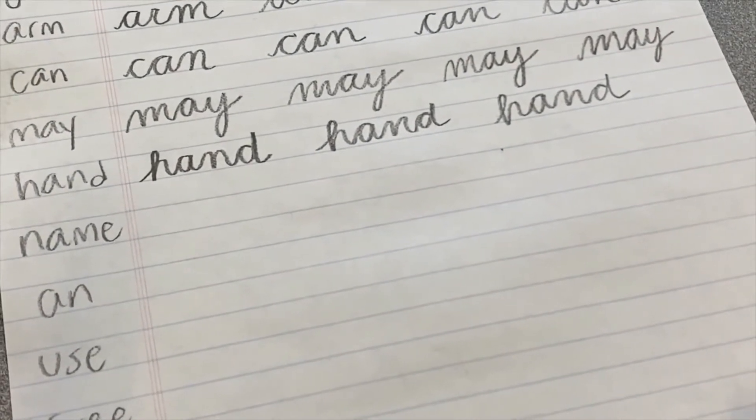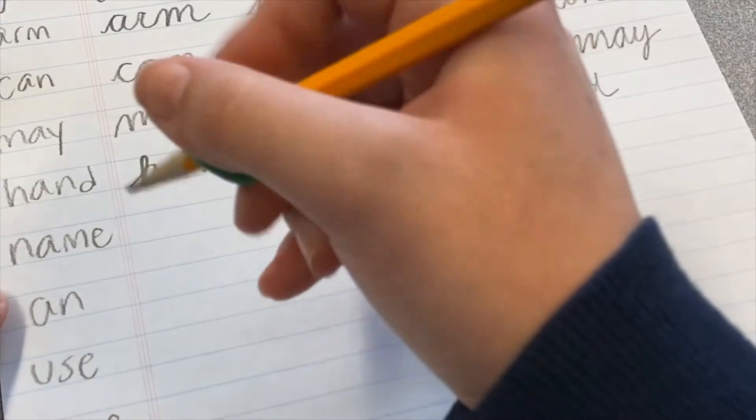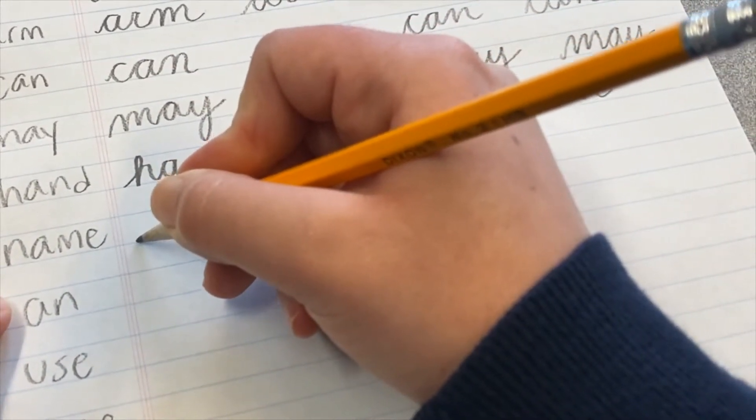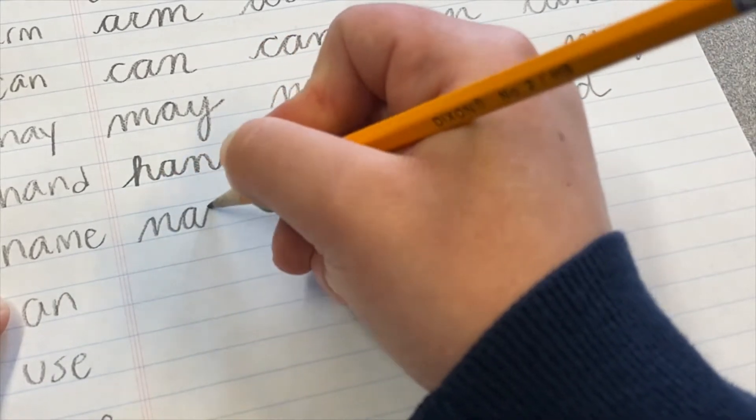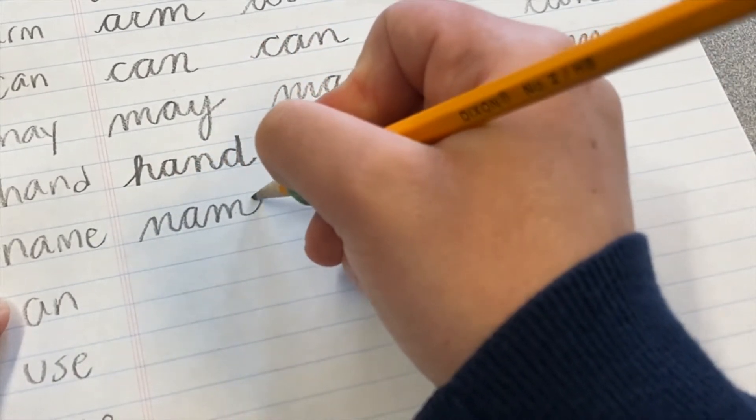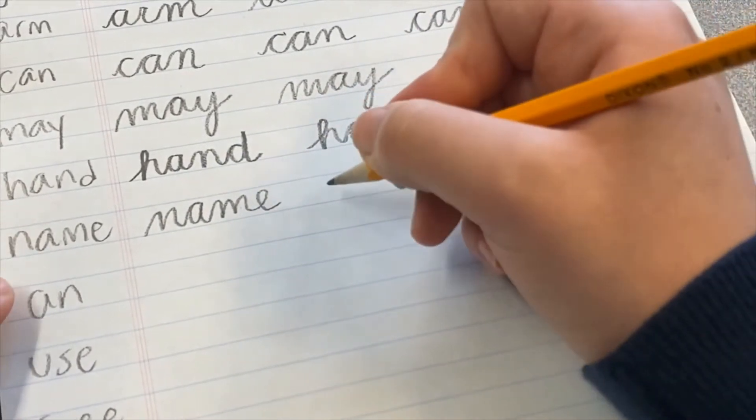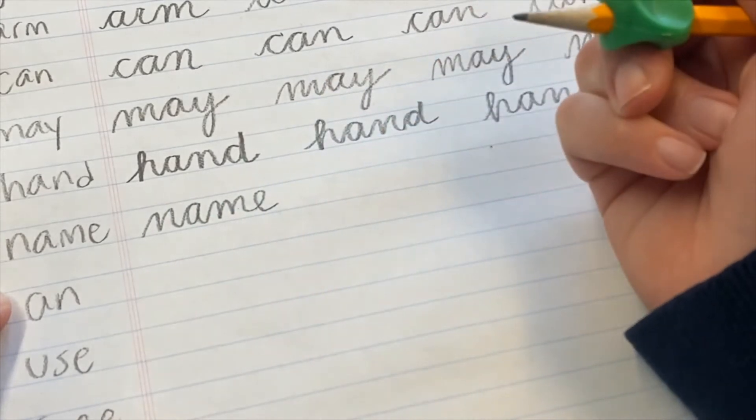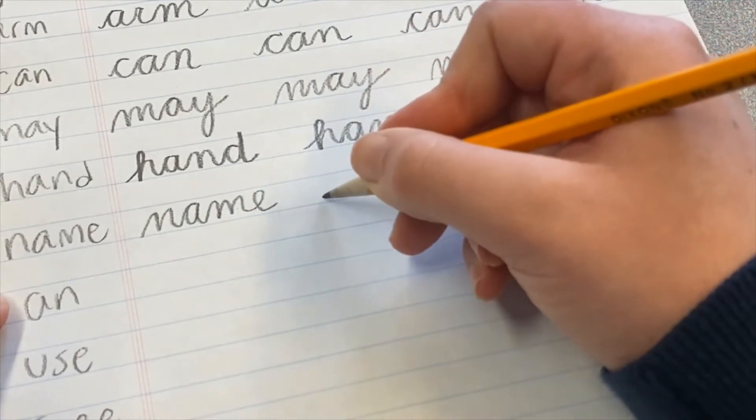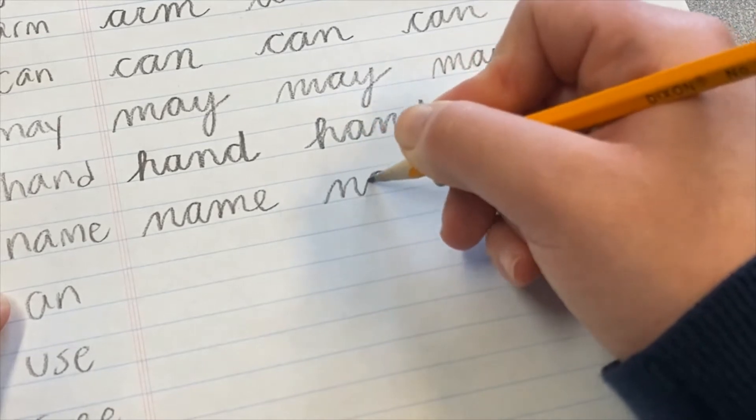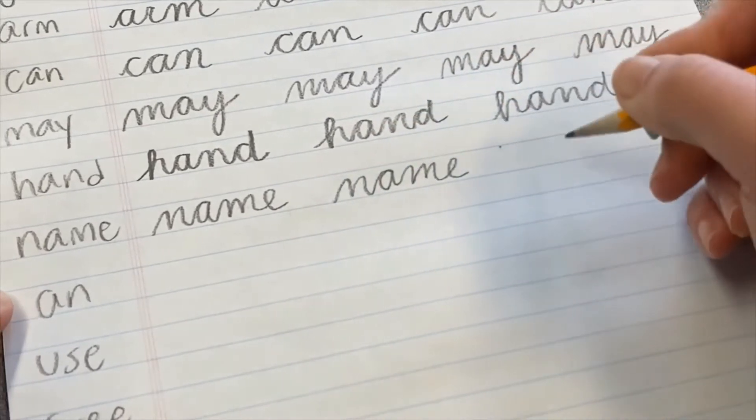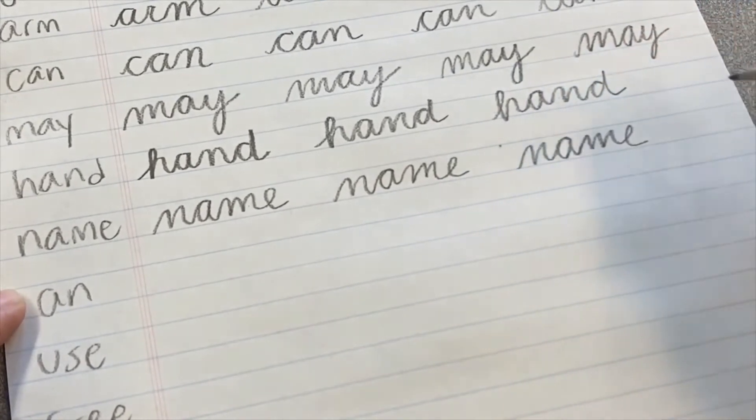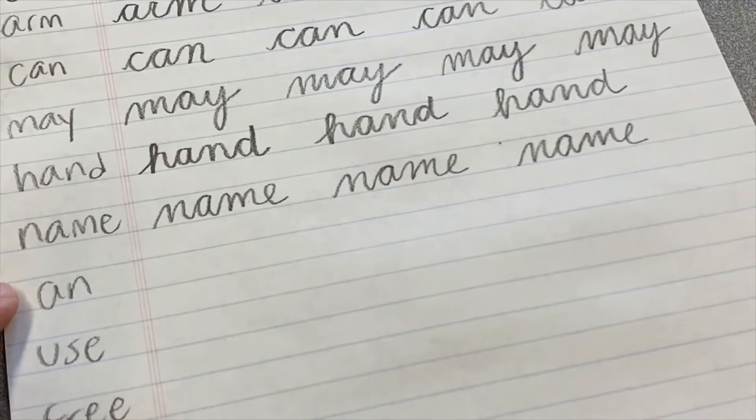Moving right along, we have the word name next. N-A-M-E. And you'll notice that we don't pick up our pencil between writing the letters. We just slide right into the next one. N-A-M-E. So this will help us to write faster later. And we don't have to pick up our pencil between the words.